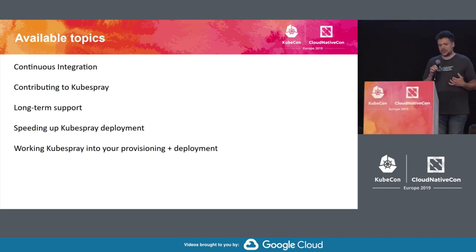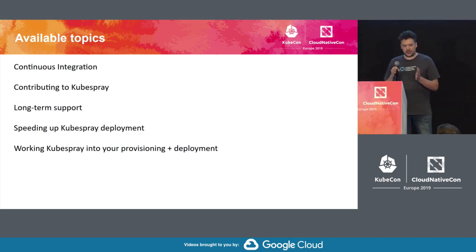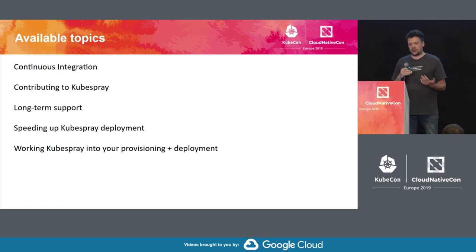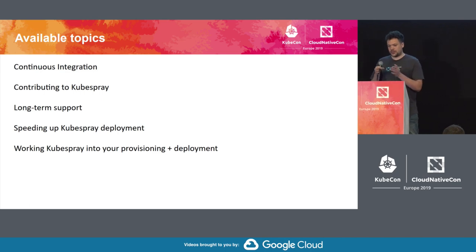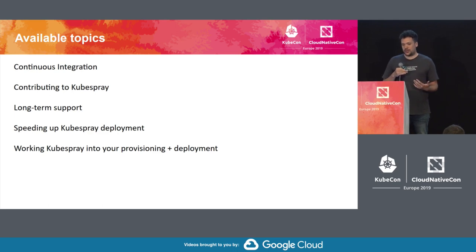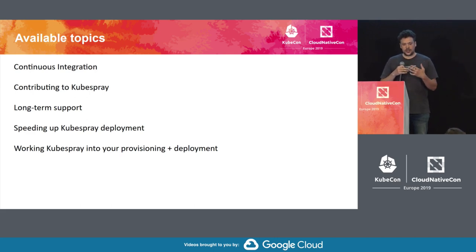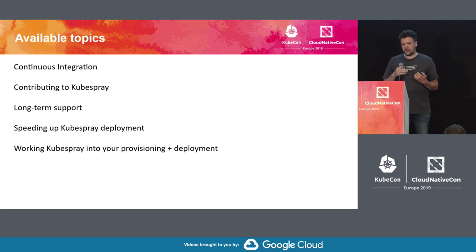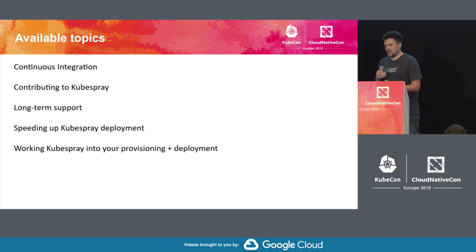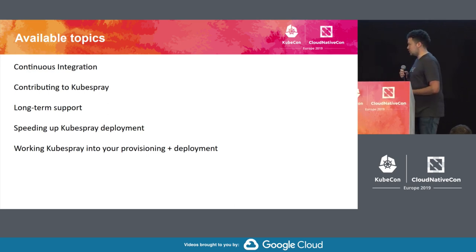Next topic: is deployment speed a matter for you? Is it fast enough, and how could we improve it — any ideas about direction? From zero to a cluster API-ready state. And last: how you're using KubeSpray in your own infrastructure. We've seen a lot of projects wrapping KubeSpray, e.g., 'I have my provisioning scripts and include KubeSpray.' Is what's upstream easy enough, or do you need to write scripts on top? If everyone needs to write scripts, maybe there's something missing upstream.